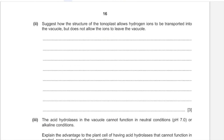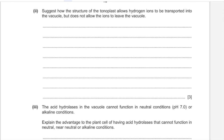The tonoplast allows hydrogen ions to be transported into the vacuole but not back out because the active transport requires protein carriers in the tonoplast. Hydrogen ions must bind to the binding site on the protein to be transported. Since transport is one-way, the binding site on the carrier protein is only accessible from the cytosol side of the tonoplast, not from inside the vacuole.